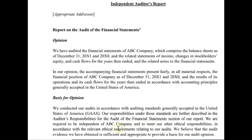The basis for opinion section states that we are required to be independent and to meet our ethical responsibilities in accordance with ethical requirements relating to audits. Then, very importantly, it states: we believe that the audit evidence we've obtained is sufficient and appropriate to provide a basis for our audit opinion. That's in the basis for opinion section, which has to be the second section of the new audit report for the non-issuer.